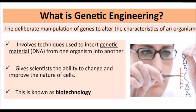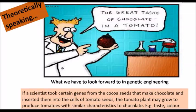We're going to go into that in more detail when we look at the applications of genetic engineering. Theoretically speaking, if a scientist were to take certain genes from the cocoa plant that make chocolate and insert them into the cells of tomato seeds, that tomato plant may be able to grow and produce tomatoes with similar characteristics to chocolate. Imagine having chocolate-flavored tomatoes — you'd have the same taste as chocolate, but with the nutritional nourishment of tomatoes. This is why scientists like to tamper with and manipulate genes: to get organisms such as animals and plants to have certain qualities and characteristics that are desirable.